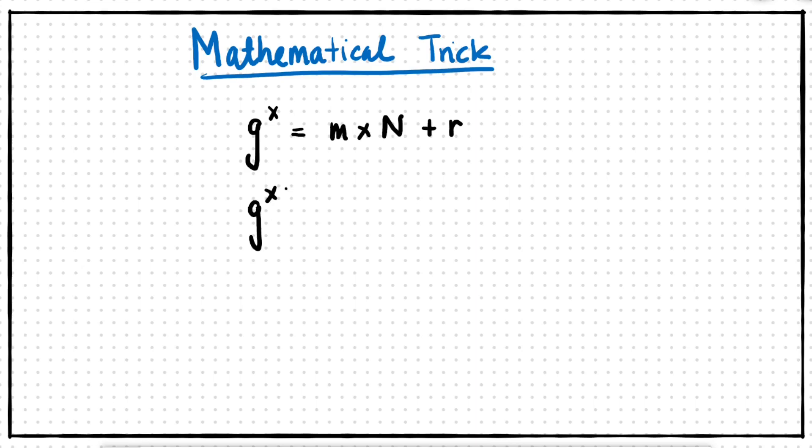To continue, we need to use this following mathematical property: g to the x equals m times n plus r, and g to the x plus p equals s times n plus r. We won't dwell on this too much, but we encourage you to look into it if you so desire. For now, we'll take it as a fact and continue.